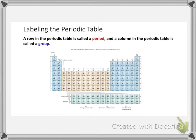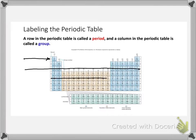The first thing we'll start with is what we call the rows and the columns. A row on the periodic table is called a period. So here, any row going all the way across would be a period — any of the rows are called periods.